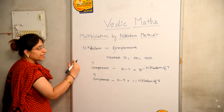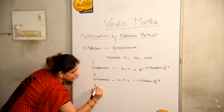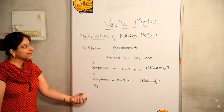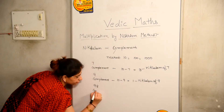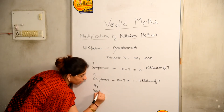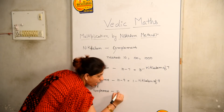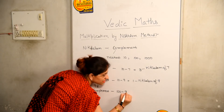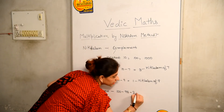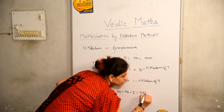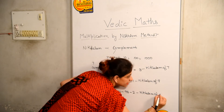Now let us move to a 2-digit number. Let us suppose I have 98. Now 98 is close to 100. The complement will be 100 minus 98, that will be 2. And 2 will be the Nikhilam of 98.